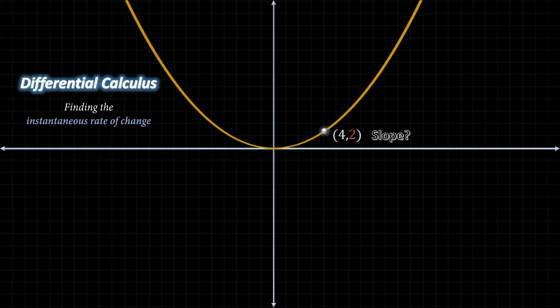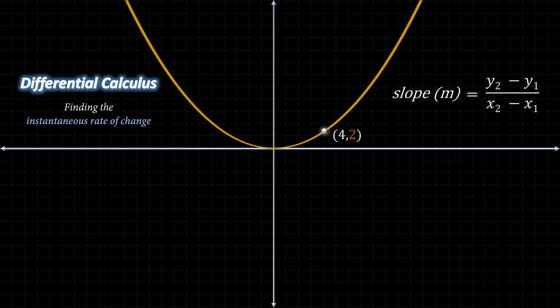Well, first off, there's no way around the fact that we need two points to find the slope of anything, since the slope equation demands two sets of coordinates. Since we're interested in the slope of the white point, let's arbitrarily set a green point right here. Now that we have two points, we can find the slope between them, shown by the purple line.